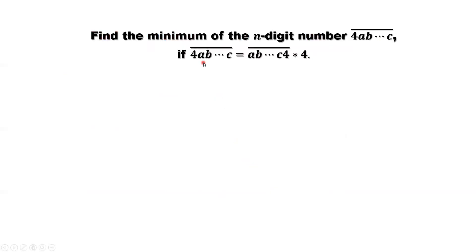From the given condition, we can see there's a pattern on both sides: A, B, until C. A, B, until C. It doesn't change.